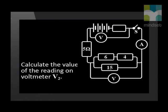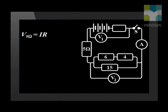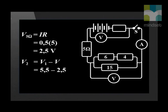Finally, let's calculate the value of the reading on voltmeter V2. First, we need to find the potential difference over the 5 Ohm resistor using Ohm's law. If we substitute our values, we find it to be 2.5 volts. Next, we subtract this value from our potential difference value at voltmeter 1 and this gives us the reading of 3 volts.